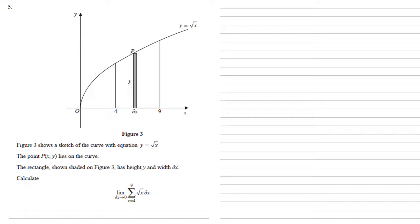We need to calculate the limit as delta x tends towards 0 of the sum between x equals 4 and 9 of root x delta x.